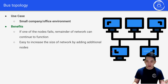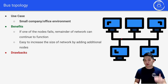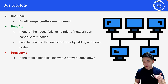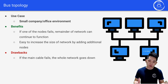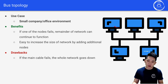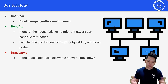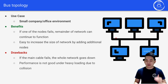Another benefit of bus topology is that it's easy to increase the size of the network by just adding additional nodes. However, a key drawback is that if the main cable fails, the whole network goes down — all nodes stop functioning because they are all connected to the same cable.